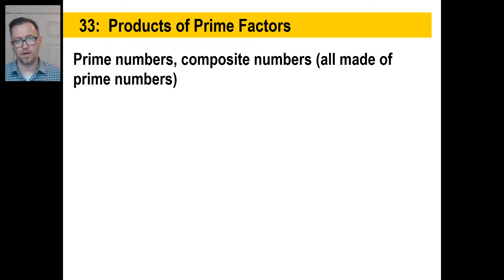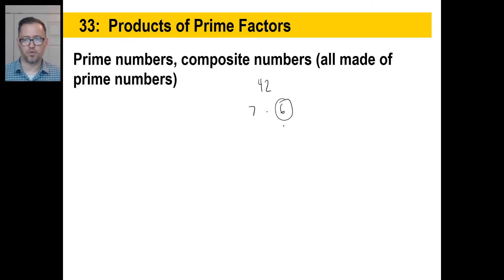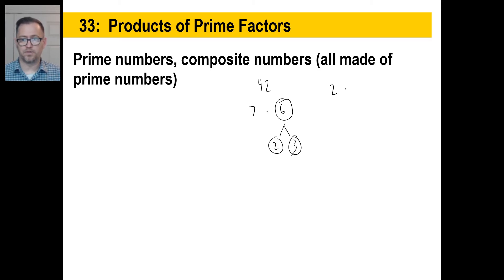Composite numbers are composed of other prime numbers. So if you have a number like 42, that is made up of seven times six. We're not just going to put seven times six because six is not a prime number. Instead, we'll break six down into two and three. So the prime factors of 42 would be two times three times seven. We'll write them in order from least to greatest.